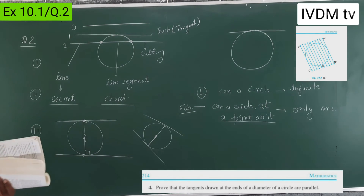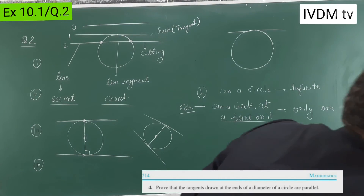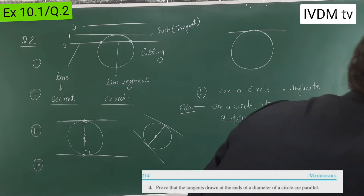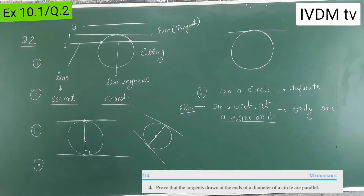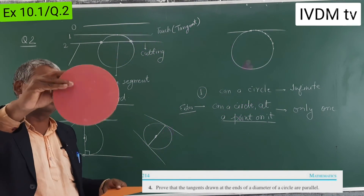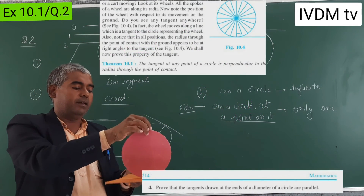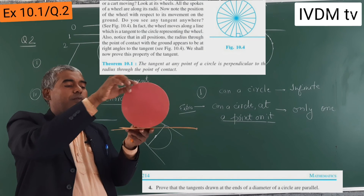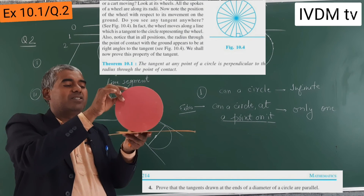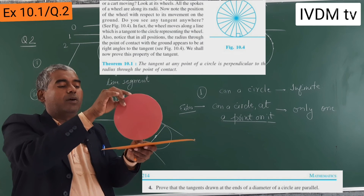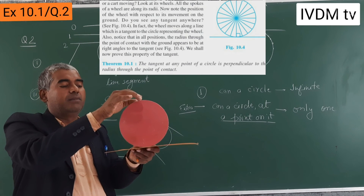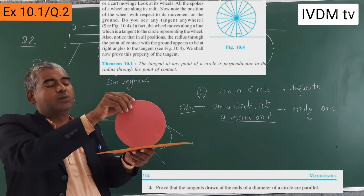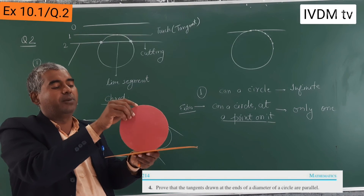Just as you have this circle — like a tire — and this is the road. So when it is moving, it is touching only one point. This is called the contact point, because the whole weight is held here. So point of contact — it is touching only the road.